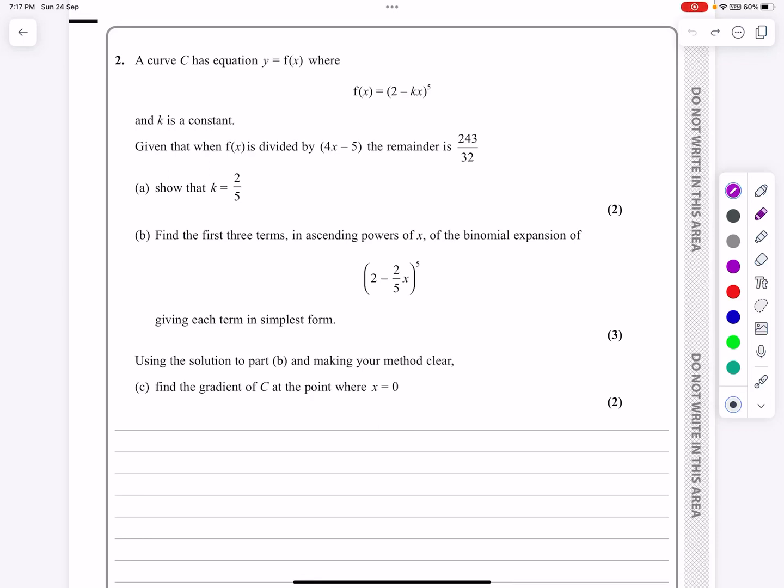Okay, this is the P2 paper from October 2022. It's question number 2, which is an algebraic methods question because we've got the remainder theorem here. Then we're going to be using the binomial expansion, and finally we're going to do a little bit of work on differentiation, but very little bit for that part.